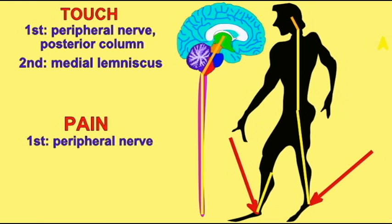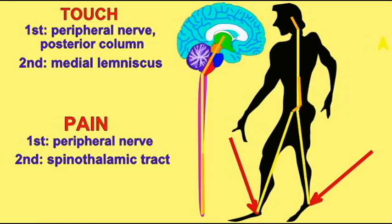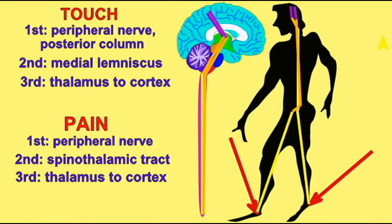It synapses in the medulla oblongata where a second order neuron carries this touch information through the brain stem to the thalamus. This pathway is known as the medial lemniscus and along the pathway the second order neuron crosses to the opposite side of the body.